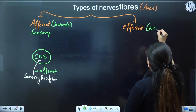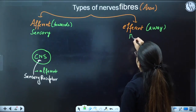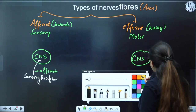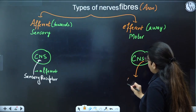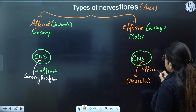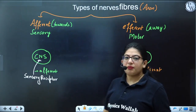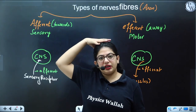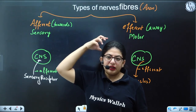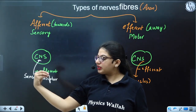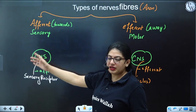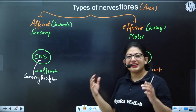Then we have Efferent. Efferent means away — they are usually motor nerve fibers. They carry information away from the CNS, usually to muscles. For example, if I have to move my arm, the CNS is connected with motor neurons. They take information from the CNS and give it to the muscle, and the muscle will move. Afferent fibers give information to CNS; efferent take information from CNS.